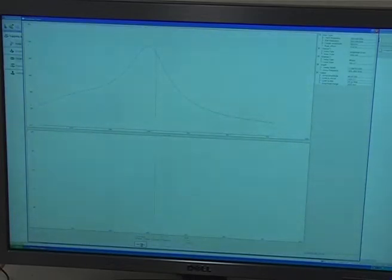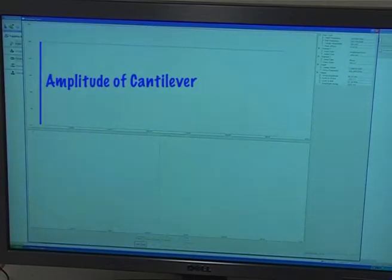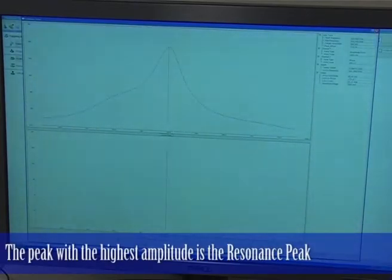It finds the peak with the highest amplitude, this is the amplitude of the cantilever. And then it focuses in on that peak. It assumes that the peak with the highest amplitude is the resonance peak. We'll exit this now.